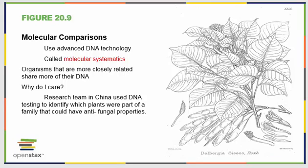Making molecular comparisons is a far safer bet for creating an accurate tree. With advanced DNA technology, we can compare entire genomes of organisms to one another — this process is referred to as molecular systematics. Organisms that share more of their DNA are more closely related. A research team in China used a genome searching tool to figure out which plants in an environment were related to a plant known for antifungal properties. The related plants could possibly contain those helpful antifungal genes, and they ended up finding healthy local related plants with these valuable properties in a far more cost-effective manner than traditional research methods.